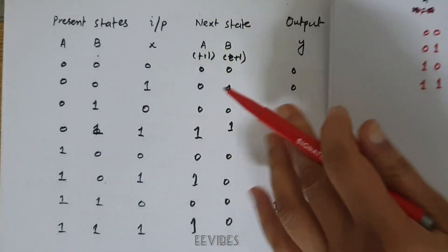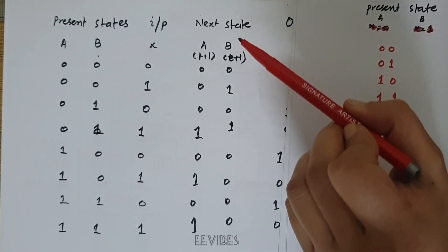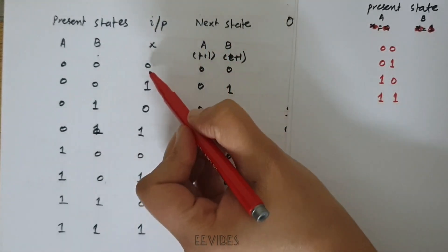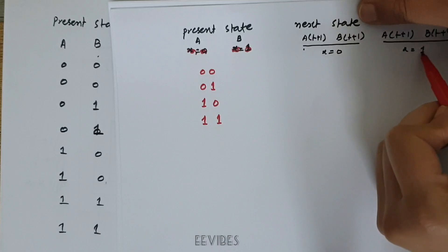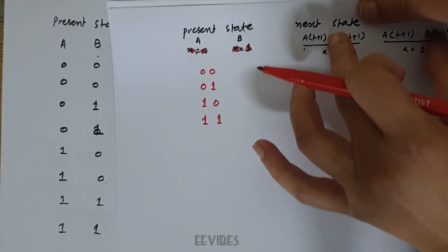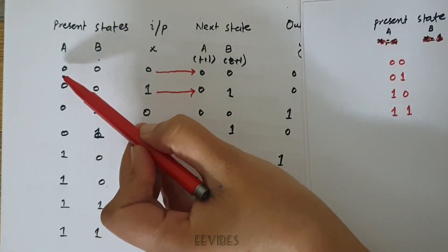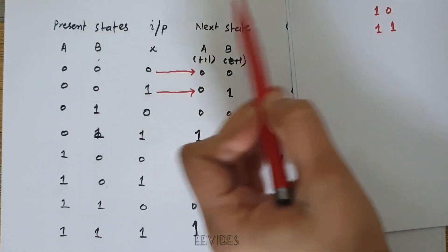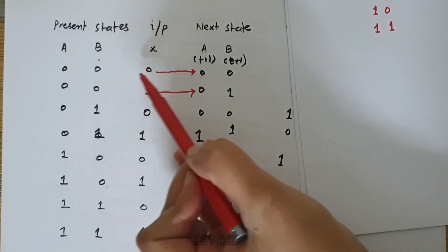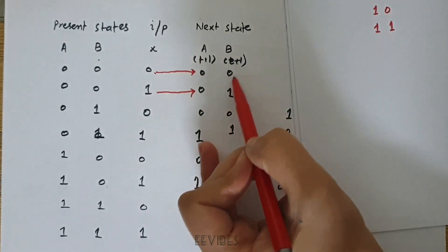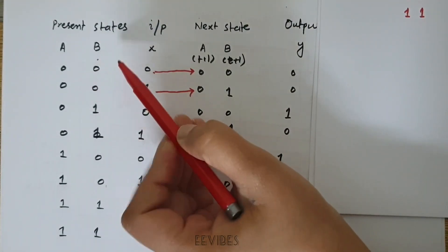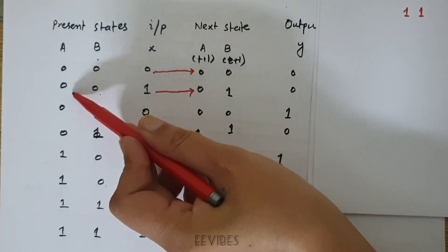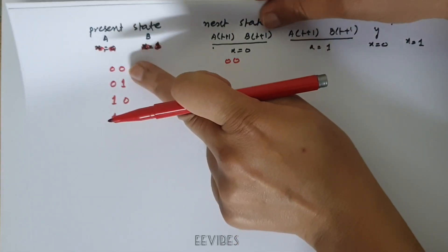In this state table we have the value of the next state corresponding to when x is equal to 0 or when x is equal to 1. I have made separate columns for x equal to 0 and x equal to 1, and I'll write down the next state value. You can map this table into compact form: being in the 0 0 state when x is equal to 0, the next state value is 0 0. Similarly, while in the 0 0 state and input x is equal to 1, the next state is 0 1.